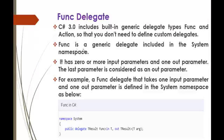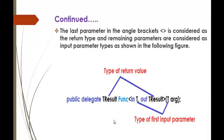Let us understand what Func Delegate is. Func is a generic Delegate included in the system namespace. It has zero or more input parameters and one output parameter — the last parameter is considered as the output parameter. For example, a Func Delegate that takes one input parameter and one output parameter: you can see I am creating a Delegate using func — funcDelegate tResult is the type, what it is going to result, taking two parameters: one is the input parameter, one is the output parameter. This is how you initialize a Func Delegate.